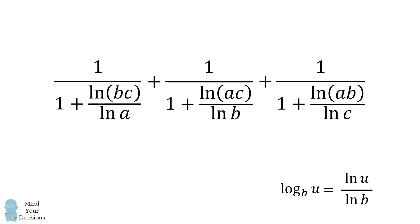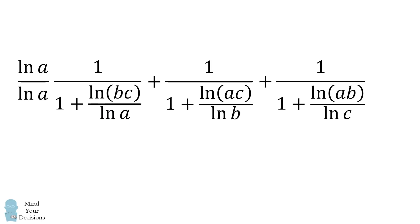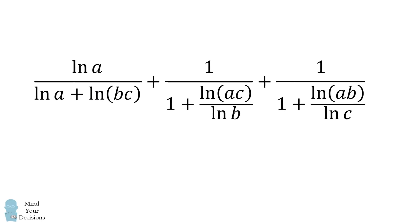We will now simplify each of these fractions. For the first term, we'll multiply it by the natural log of A divided by the natural log of A. The numerator becomes the natural log of A, and the denominator becomes the natural log of A plus the natural log of the product BC.